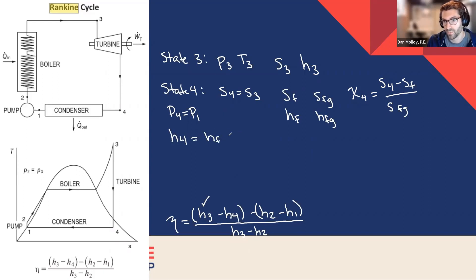HF plus quality at four times HFG and all of these values, these four values are being looked up at P4, so P1, they're the same, right? But looked up at that pressure, that's a key insight. So now we've got H4 and this is H3 as well. So that's known.